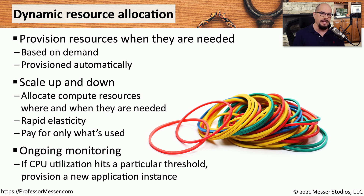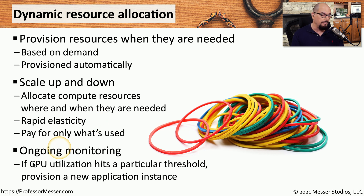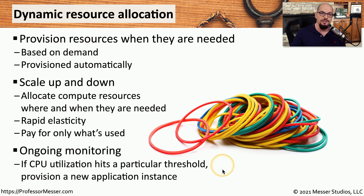It's common to combine this dynamic resource utilization with some type of monitoring system that can identify when the load increases and when it decreases. For example, you may want to monitor CPU utilization, and when that utilization reaches a certain threshold, you can add additional resources to distribute the load across multiple compute instances.